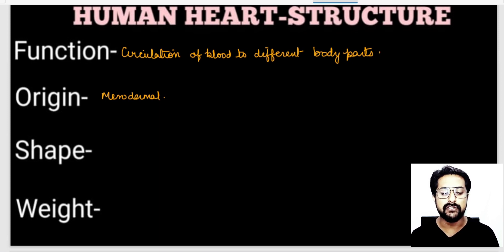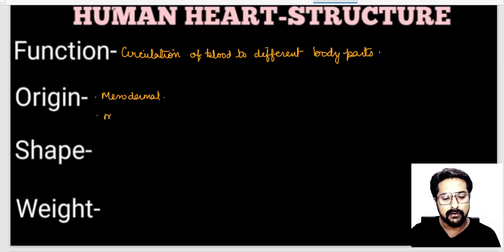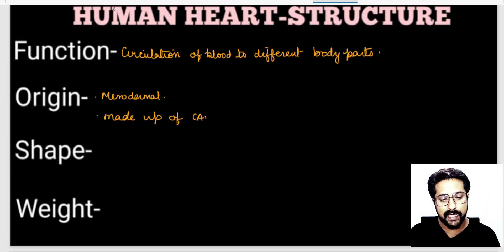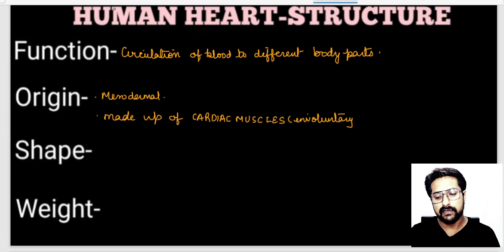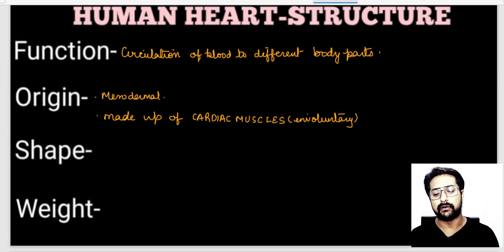Our heart is mesodermal in origin and it is made up of cardiac muscles. These cardiac muscles are basically involuntary in nature, which means they do not function according to our willpower.